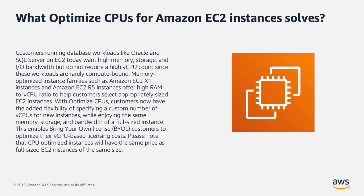With optimized CPUs, customers now have the added flexibility of specifying a custom number of vCPUs for new instances while enjoying the same memory, storage, and bandwidth of a full-sized instance. This enables Bring Your Own License customers to optimize their vCPU-based licensing costs. Note that CPU-optimized instances will have the same price as full-sized EC2 instances of the same size.